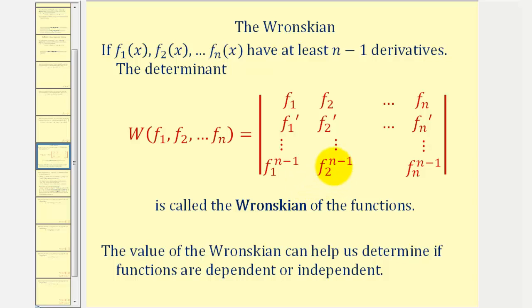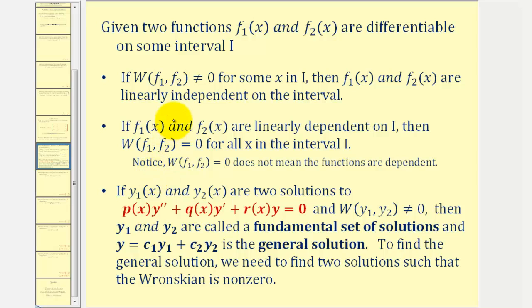In this video, we're going to be focusing on just having two functions. So we'll have a two-by-two determinant where the first row will be the original functions and the second row will be the first derivatives. For example, if we have two functions f₁ and f₂ that are differentiable on a given interval, if the Wronskian doesn't equal zero for some x in the interval, then f₁ and f₂ are linearly independent on the interval. And if f₁ and f₂ are linearly dependent on the interval, then the Wronskian will equal zero for all x in the interval.